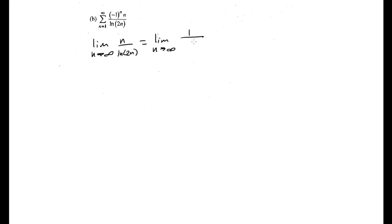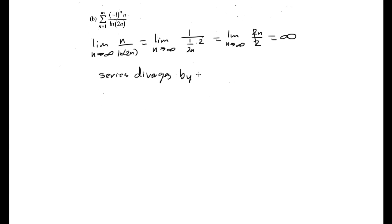In our second example, we have another alternating series, and we have to show the same two things. The limit as n approaches infinity of n over the natural log of 2n is infinity over infinity, so we can use L'Hôpital's rule. That gives us the limit as n approaches infinity of 1 over (1 over 2n times 2), which equals the limit as n approaches infinity of 2n over 2. The 2's cancel out and this equals infinity. So it does not equal 0, and the series diverges by the nth term test.